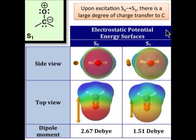The electrostatic potential energy surfaces and corresponding models in this table show the changes in geometry and charge transfer that take place upon going from the S0 state to the first excited state of formaldehyde.